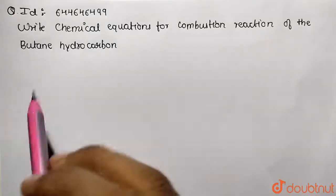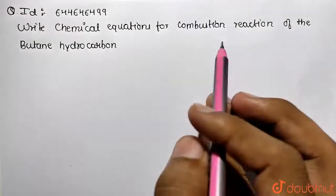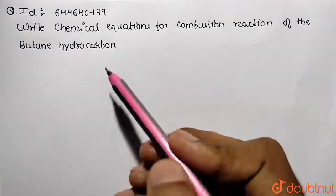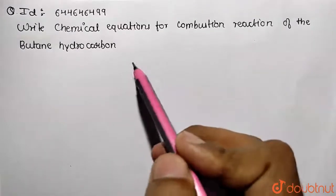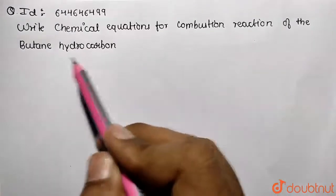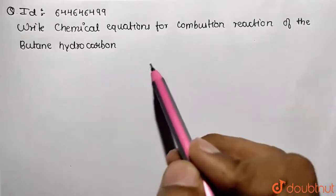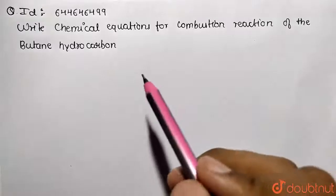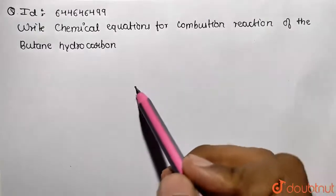Students, in this given question you need to write the chemical equation for the combustion reaction of butane hydrocarbon. Basically, butane is the hydrocarbon given, and what is the combustion reaction? Basically reacting with oxygen of a given hydrocarbon to produce carbon dioxide and water as the byproduct. These are the main components of the reaction.